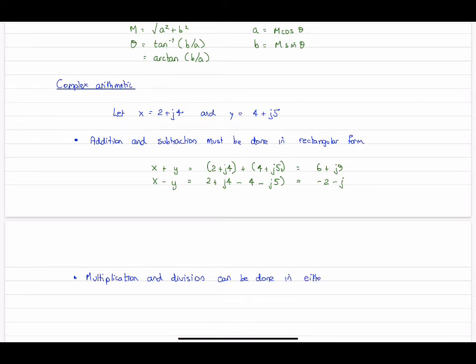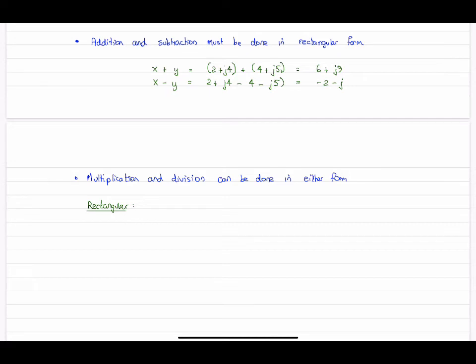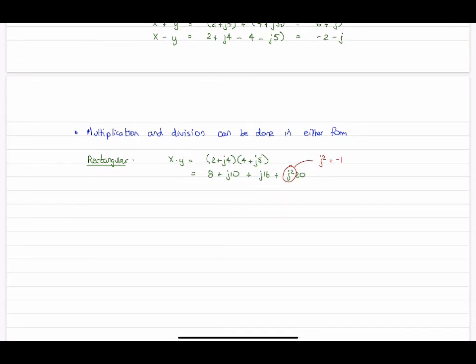So multiplication and division, we have some choice here. And either way, it's really not pretty. So we can do this either in rectangular form or polar form. And let's do it each way. And let's start with rectangular. So product of x and y. So 2 + j4 times 4 + j5. So just multiply it out. We get four terms. 8 + j10 + j16. And the final term's got a j squared in it. Remember, that's minus 1. So that will contribute to the real part. So the overall number is that.